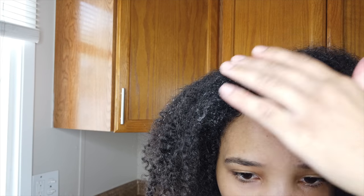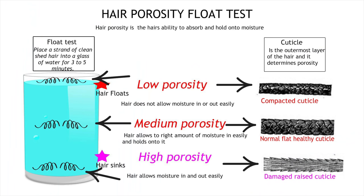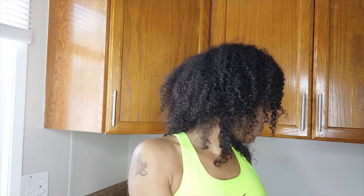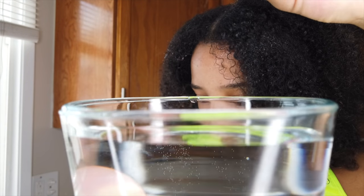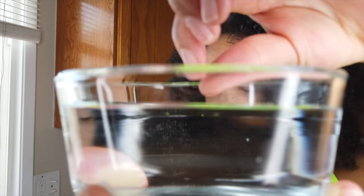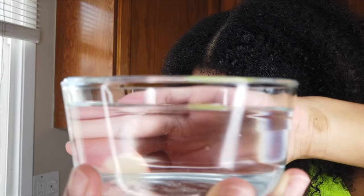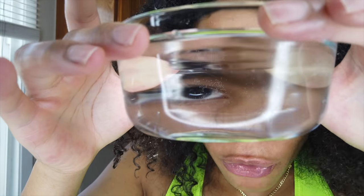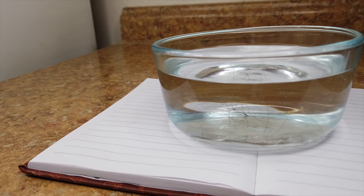Now we have the product side and the plain water side. Test number four is the actual float test — I haven't done it yet, so we'll experience it together. I'm washing my hands, then I'll pluck a strand. I got the root too. The strand is in the water now. Let's see what happens — it looks like it sank. The float test — it hasn't even been in there long, maybe 10 minutes.